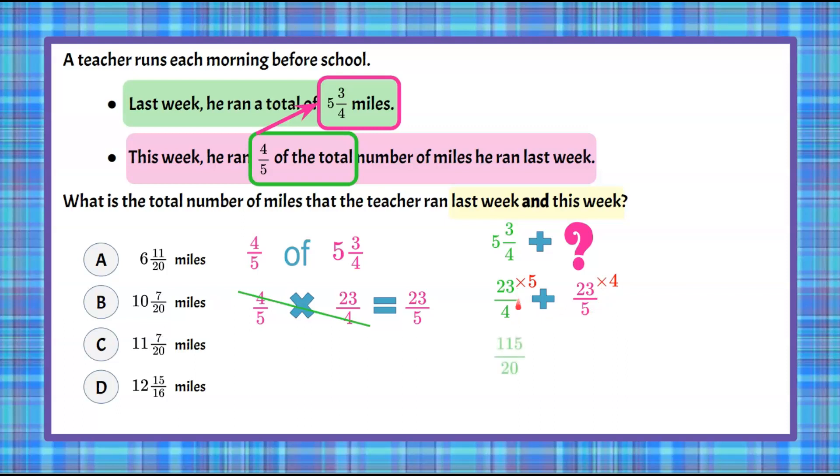23 times 5 is 115, and 4 times 5 is 20. Now let's do the same thing here. 23 times 4 is 92, and 5 times 4 is 20. So now that we have that common denominator, we're going to keep that denominator and add our numerators. So 115 plus 92 is 207 over our common denominator of 20.